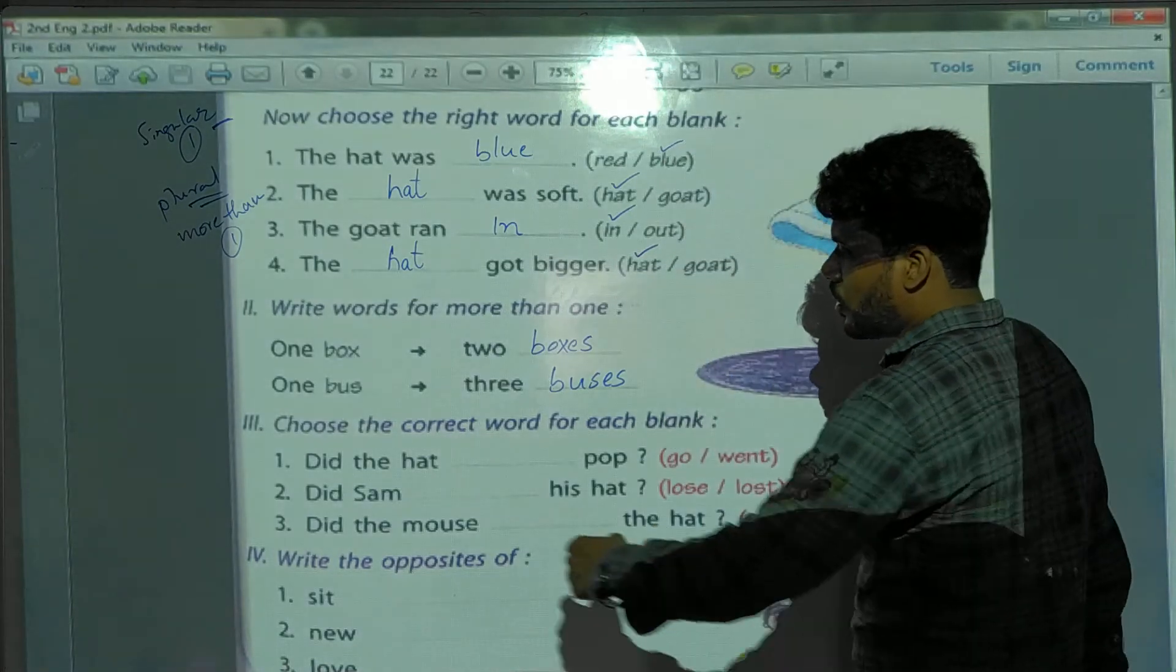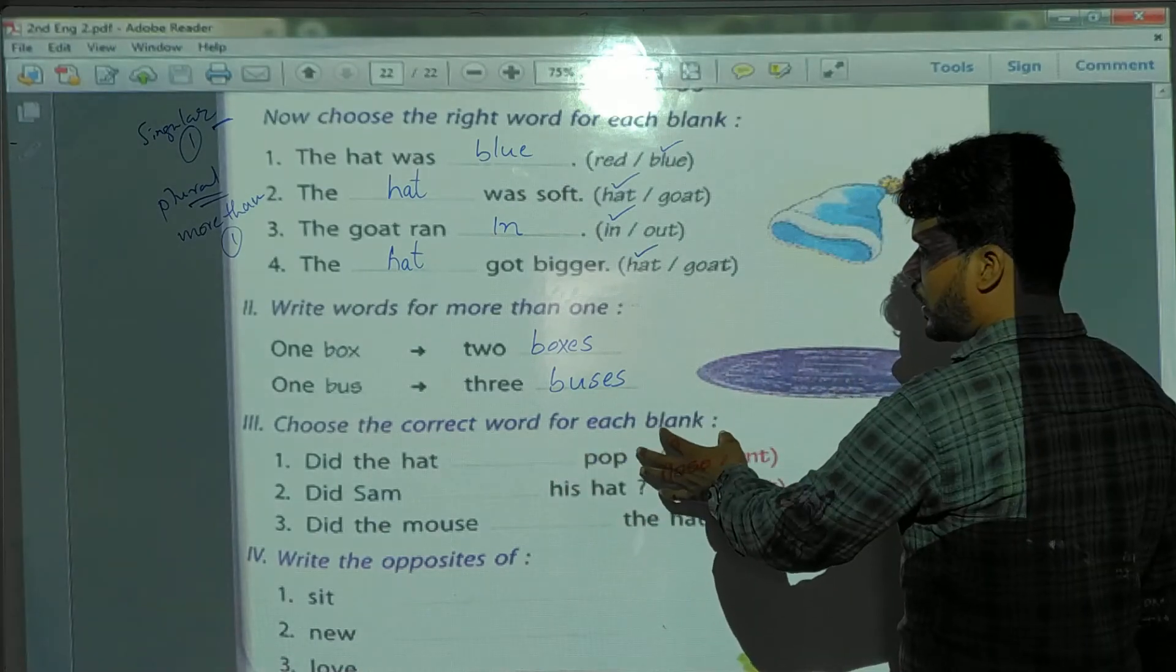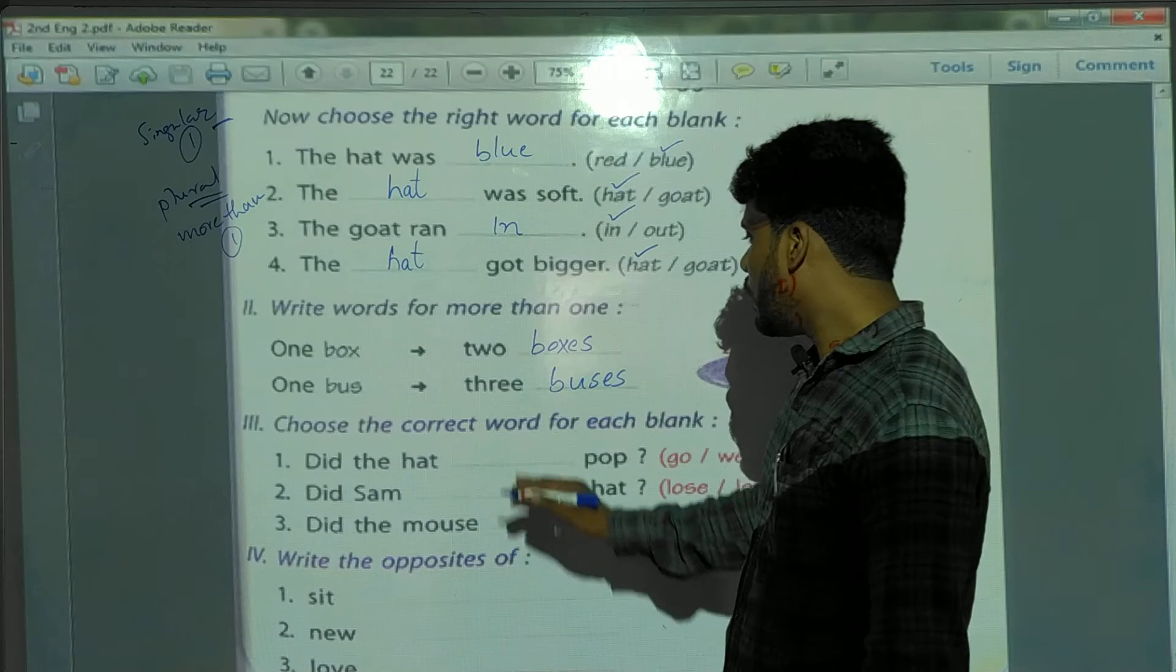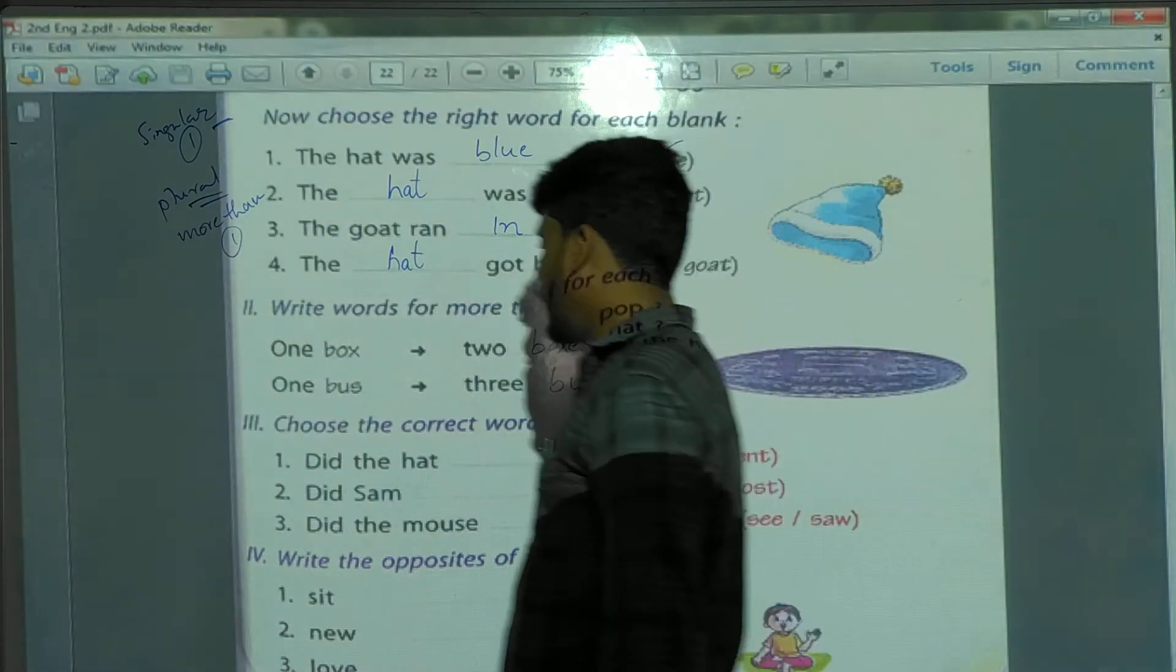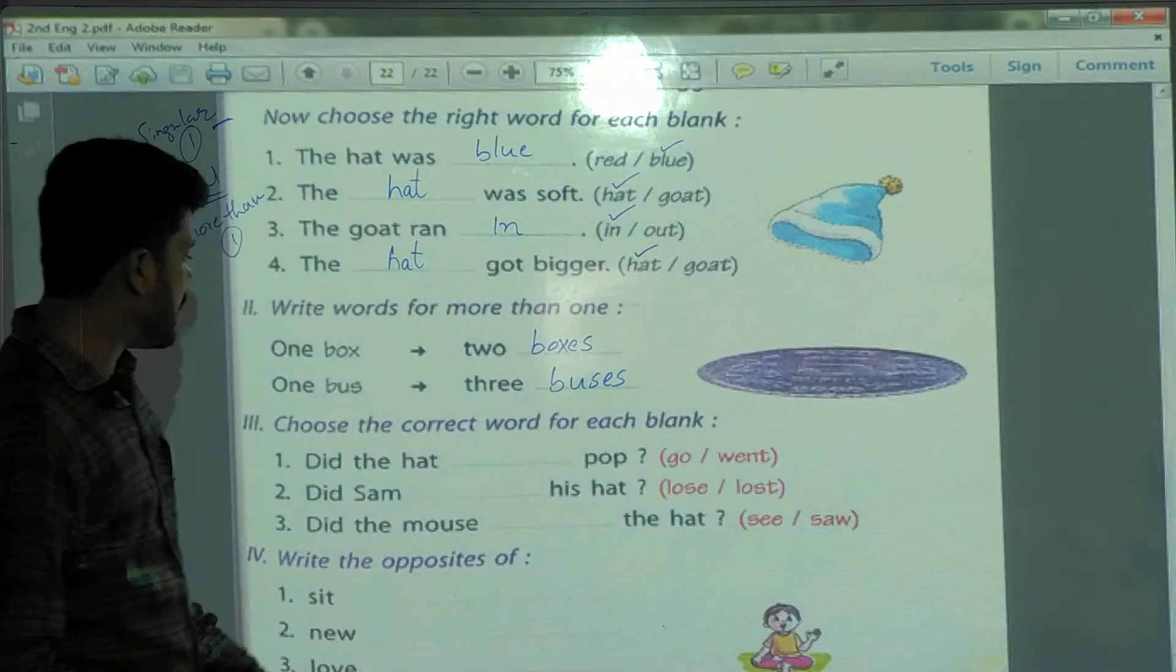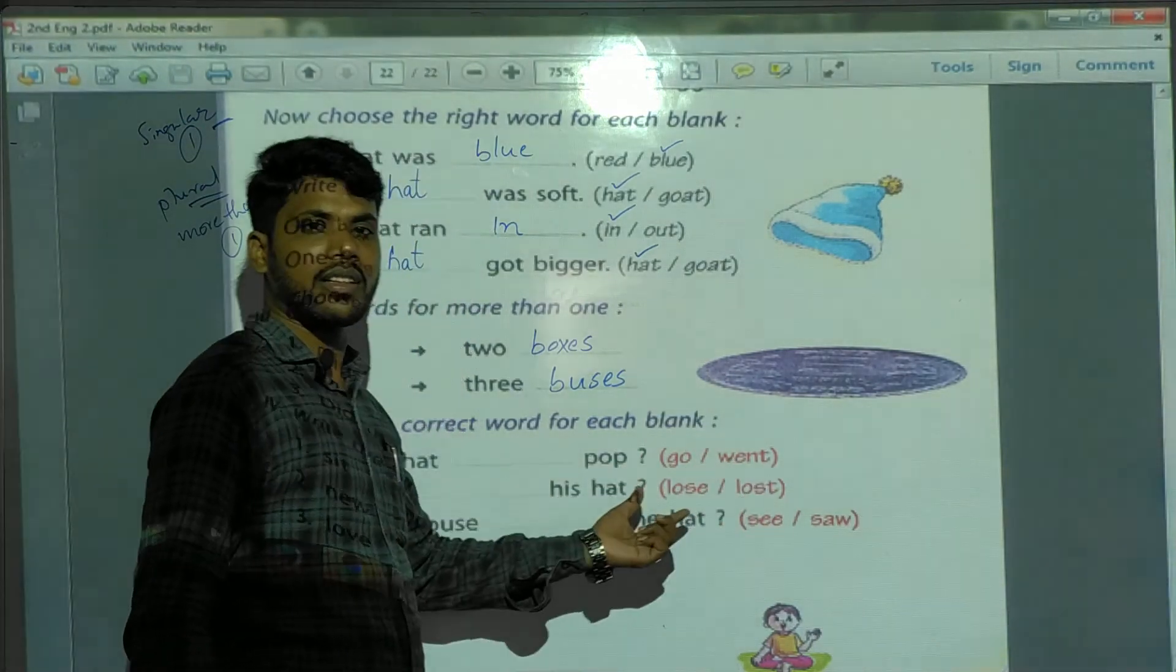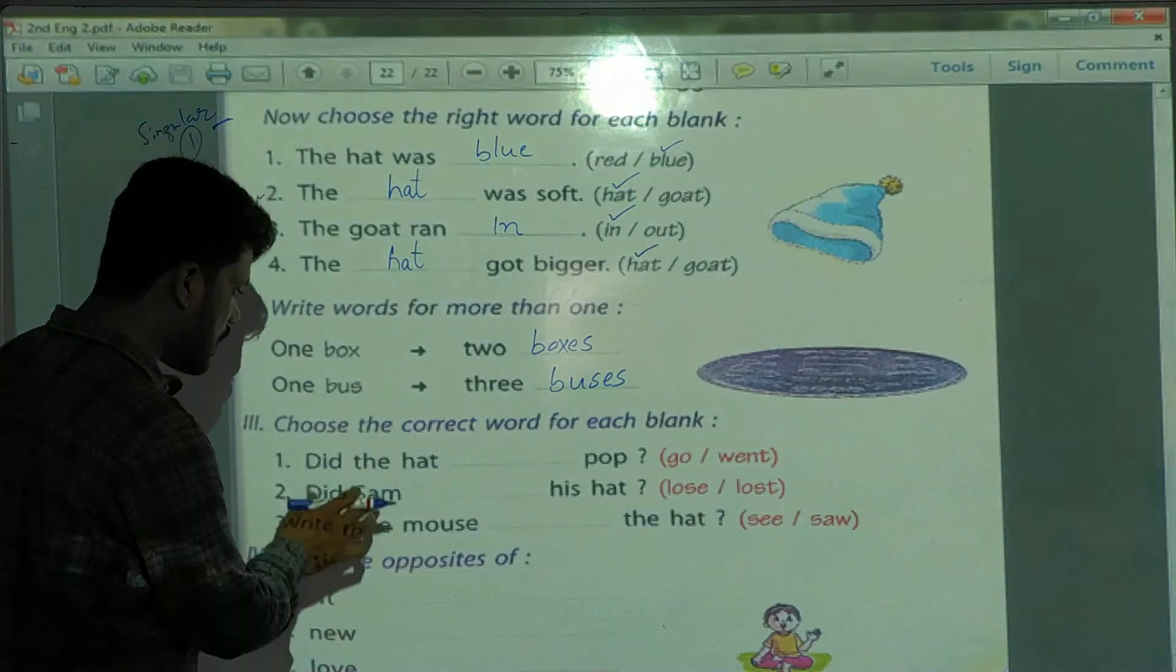Okay, next. Choose the correct word for each blank. So, in this way, we have to identify the option, which one is correct, that we have given. So, what is the sentence?